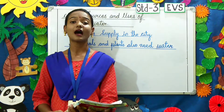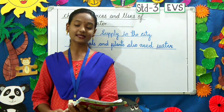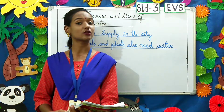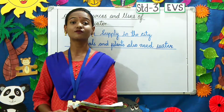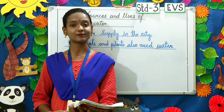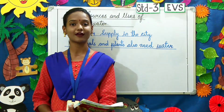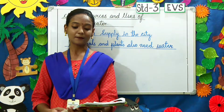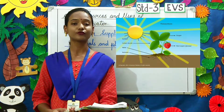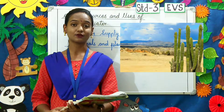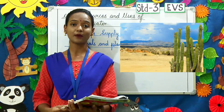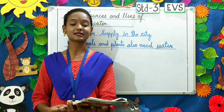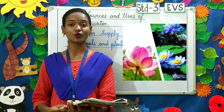Our last topic is: animals and plants also need water. As we know, we human beings cannot survive without water — water is very essential for us. Similarly, plants and animals also need water to survive. Plants use water to prepare their own food. Plants like cactus and palms, which are found in the desert, use less water to grow, whereas plants like lotus and lily cannot grow without water.